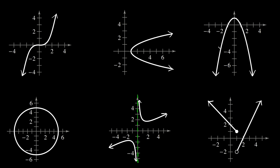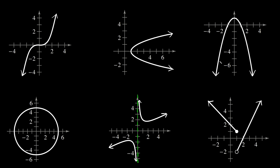Now what about this one? This is an upside-down parabola. If we draw a vertical line, you can see it only intersects it at one point. Doesn't matter where we draw this vertical line, it's always going to intersect it at just a single point. So this one is a function.